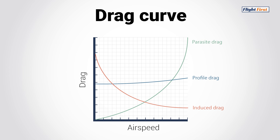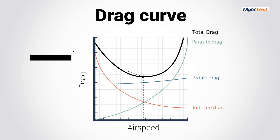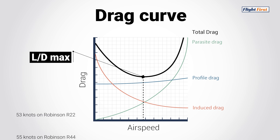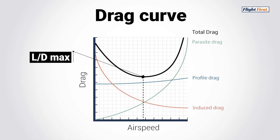Induced drag will be at its highest at lower airspeeds and will tend to decrease rapidly with airspeed. Since we have a high angle of attack in a hover, we can expect plenty of induced drag. The lowest point of the total drag curve shows the airspeed at which drag is minimized — this is where the aircraft is most efficient, referred to as L/D max, where the lift-to-drag ratio is most efficient. This is very important for helicopter performance and pilots use this knowledge every day to stay safe.